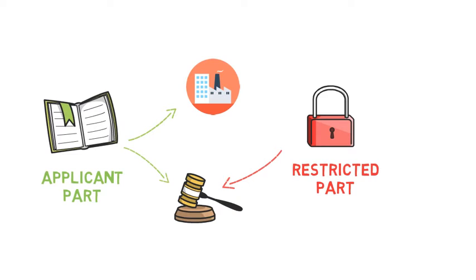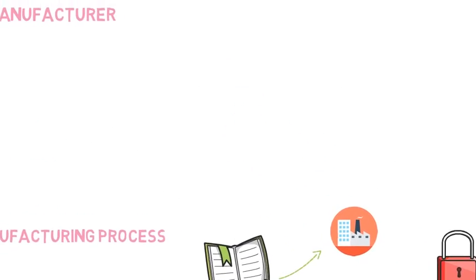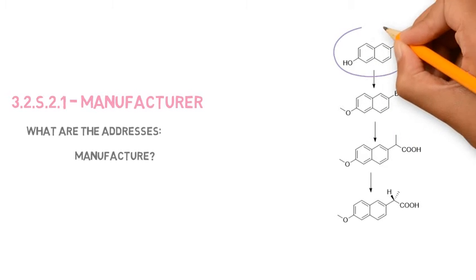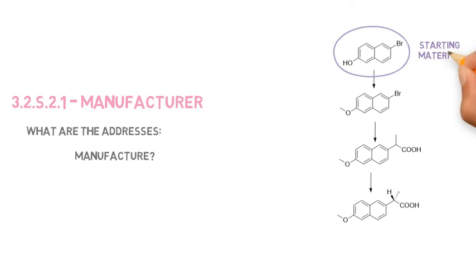In the manufacturer subsection, the address where the API is produced must be clear and include all sites involved from the introduction of the starting material.